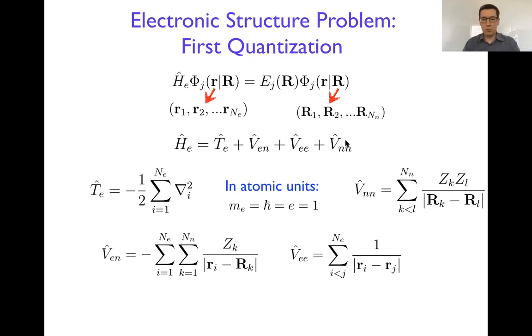We also have the electronic Hamiltonian here containing four terms: kinetic energy of electrons and Coulomb terms for all charged particle interactions. Those terms are easier to write in so-called atomic units, where some constants are all equal to one, like mass of electron, Planck constant, unit of charge. In order to avoid carrying all these constants, the easiest form is to write them in atomic units, and those are the operators that you get.